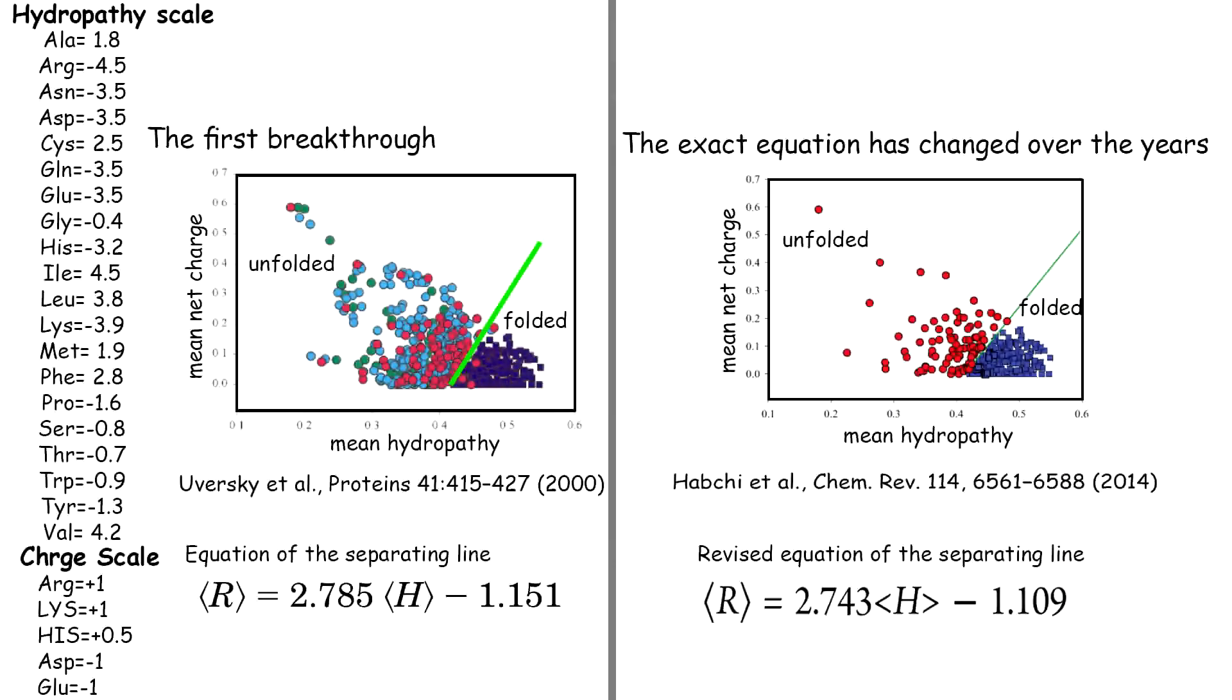Uversky calculated two simple parameters: the mean net charge and the mean net hydropathy of a polypeptide chain using only the information of its amino acid composition. The hydropathy and charge scales used to generate this plot are also provided here. In this charge-hydropathy space, he observed that proteins that are experimentally known to fold into globular structures clustered together in the low net charge, high net hydropathy region. While proteins that are unable to fold spontaneously clustered together in the high net charge, low net hydropathy region of the space.